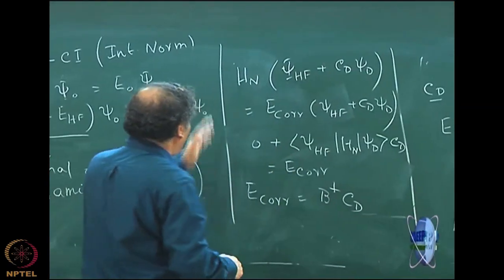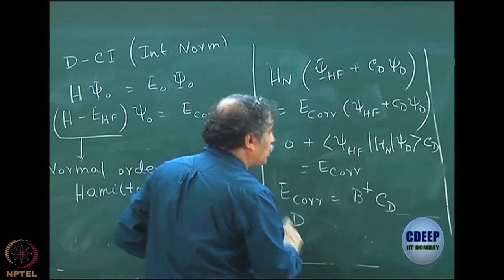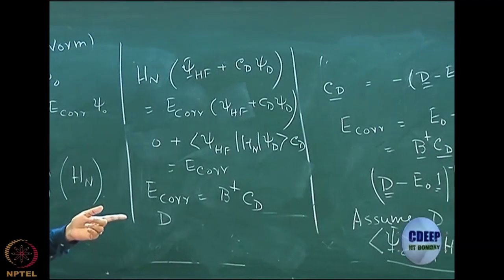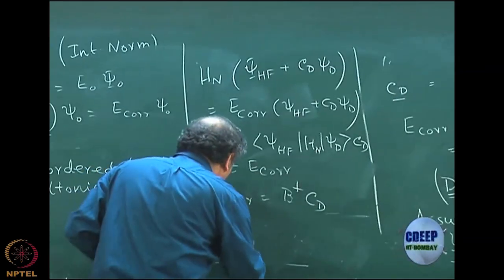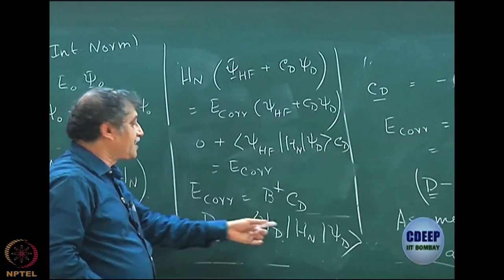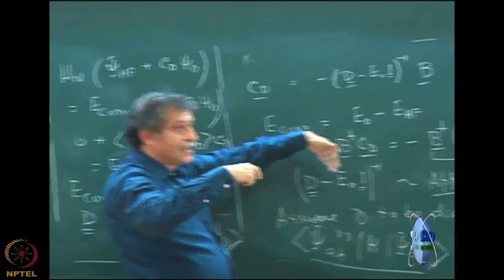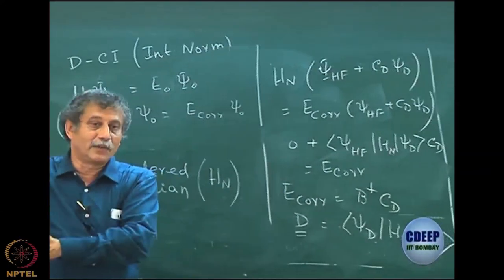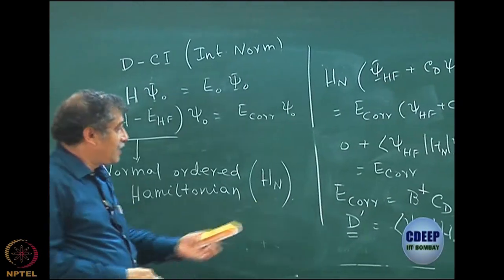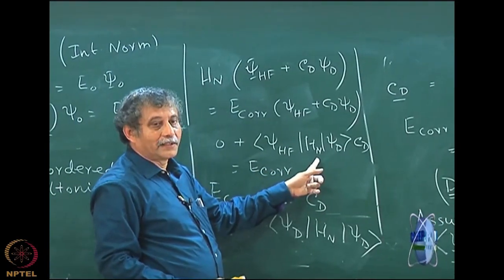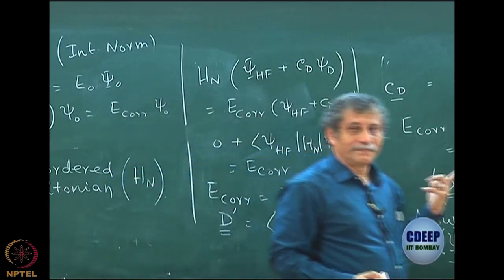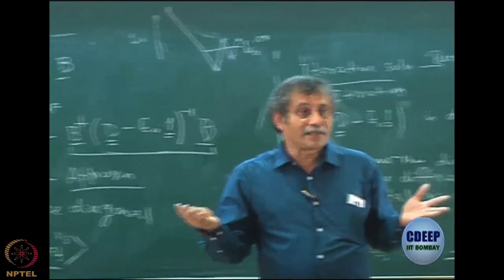Then you project onto another excited determinant psi_d and get the matrix D, which is psi_W | H_N | psi_doubles. This D' is now different from the previous D because E_Hartree-Fock is subtracted. So D' is defined as psi_doubles | H_N | psi_doubles. The difference is that D' does not contain E_Hartree-Fock — I am subtracting E_Hartree-Fock from the diagonal only. The number can only be subtracted from the diagonal. For the off-diagonal elements, whether it is H_N or H, the value is the same, because the orthogonal states give zero there.